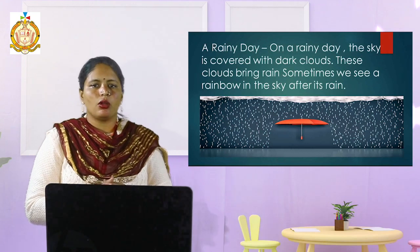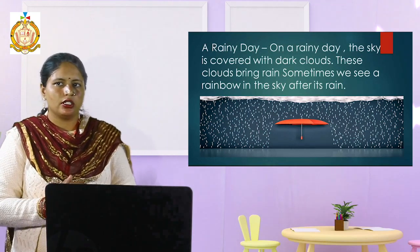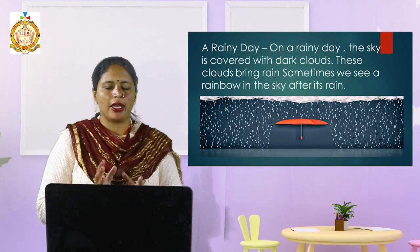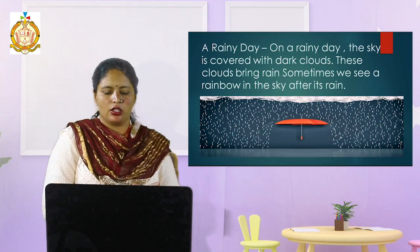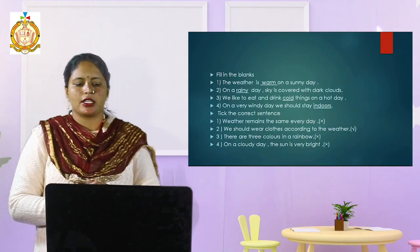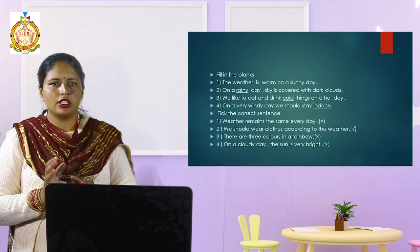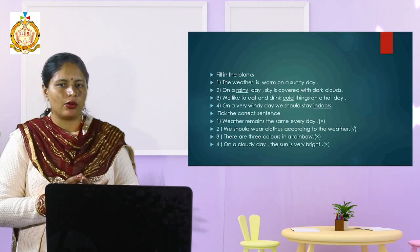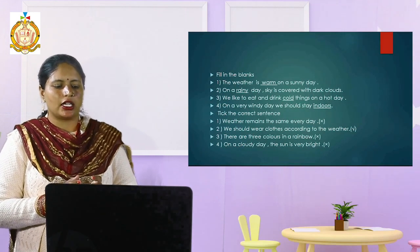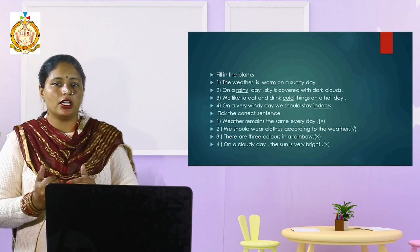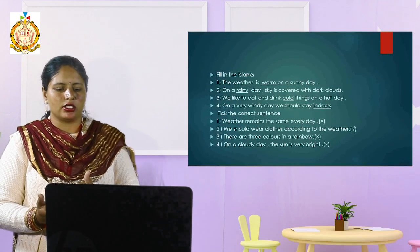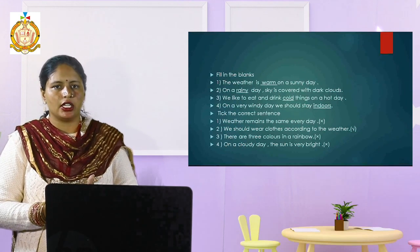So this is all about the chapter. Now I am going to read the back exercise. Fill in the blanks — first: the weather is blank on a sunny day. The answer is warm. Second: on a blank day the sky is covered with dark clouds. The answer is rainy.